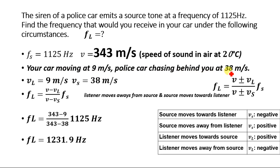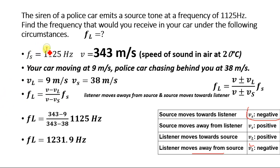For the fourth condition: your car is moving at 9 meters per second and the police car is chasing behind you at 38 meters per second. Your car is moving away from the police car, so the listener moves away from the source — VL is negative. The police car is chasing our car, meaning the source is moving toward the listener — VS is negative. Substituting FS, V, VL, and VS and solving, we get 1231.9 Hertz — the frequency we will hear in our car.